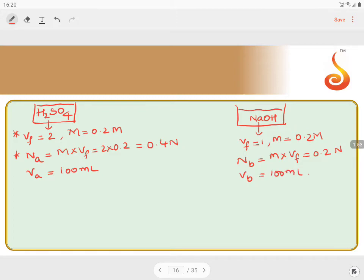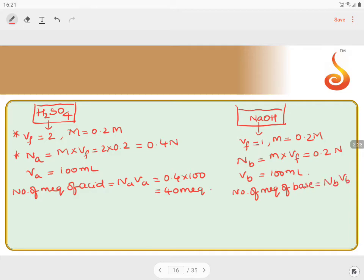So let us go for the reaction where we are taking the number of milliequivalents of acid. Milliequivalents of acid which is equals to NA times VA, which is 0.4 into 100, which comes to be 40 milliequivalents. Similarly, number of milliequivalents of base. Milliequivalents of base is equals to NB times VB, which is equals to 0.2 into 100, that is 20 milliequivalents.